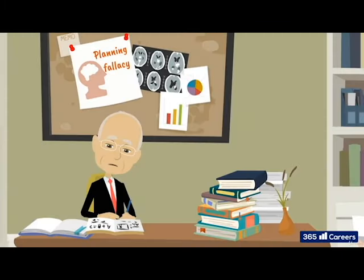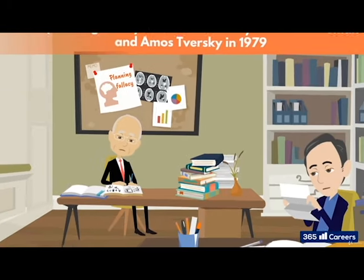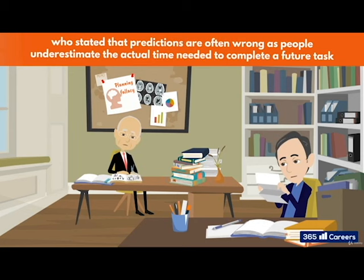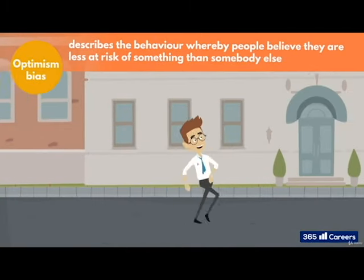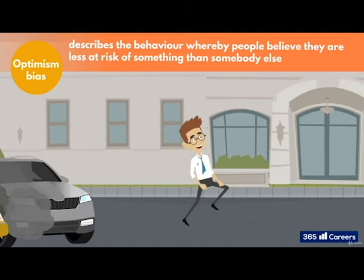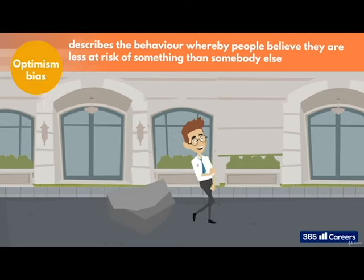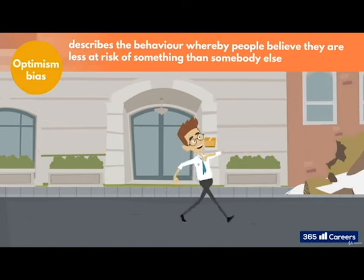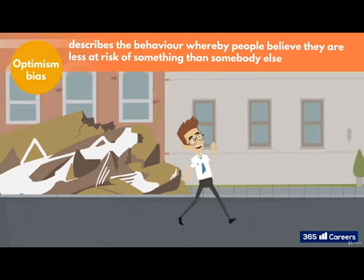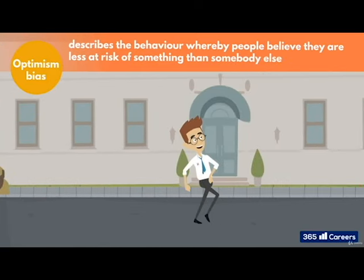The planning fallacy is a phenomenon in human behavior discovered by Daniel Kahneman and Amos Tversky in 1979, who stated that predictions are often wrong as people underestimate the actual time needed to complete a future task. They believe things will work out well due to the optimism bias. The optimism bias is a term used to describe the behavior whereby people believe they are less at risk of something than somebody else. Think of the age old, I never thought it would happen to me. This is an almost universal cognitive function. Therefore, the optimism bias is an understandable reason why people neglect to think of every worst-case scenario when planning.